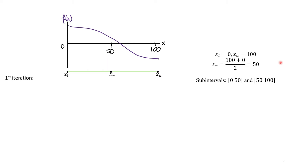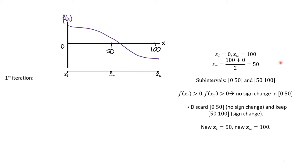So, we get two subintervals, one from 0 to 50 and one from 50 to 100. We keep the subinterval which contains a sign change and discard the other. In this case, the interval 50 to 100 contains a sign change, so our new bounds become xl = 50 and xu = 100.